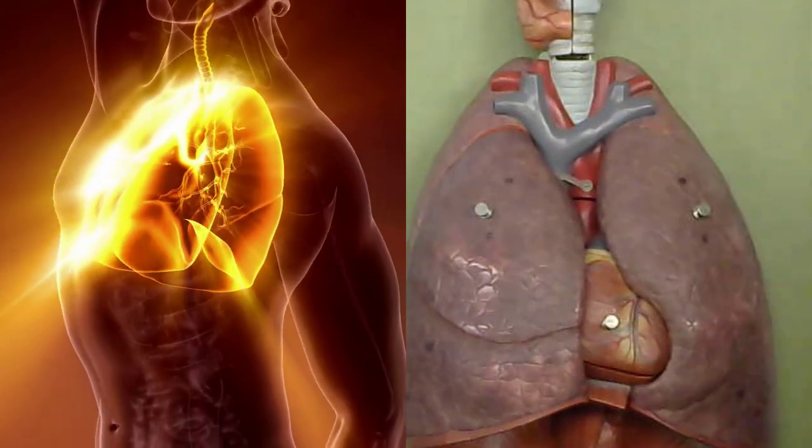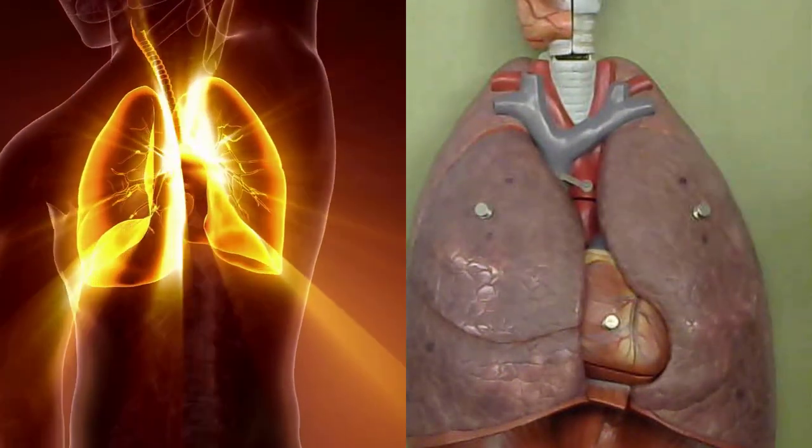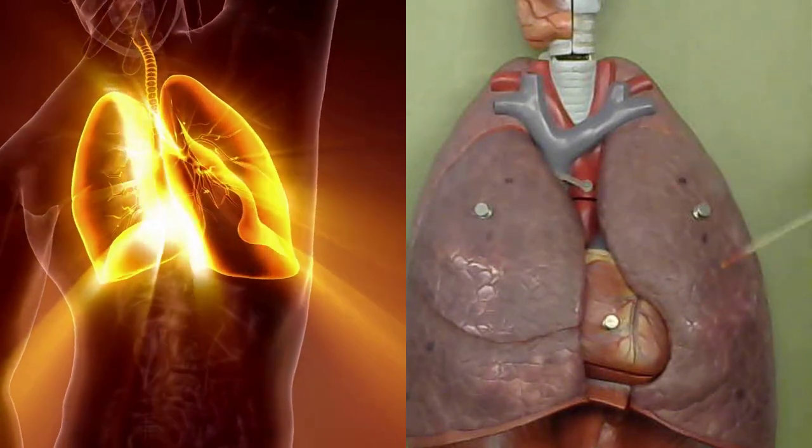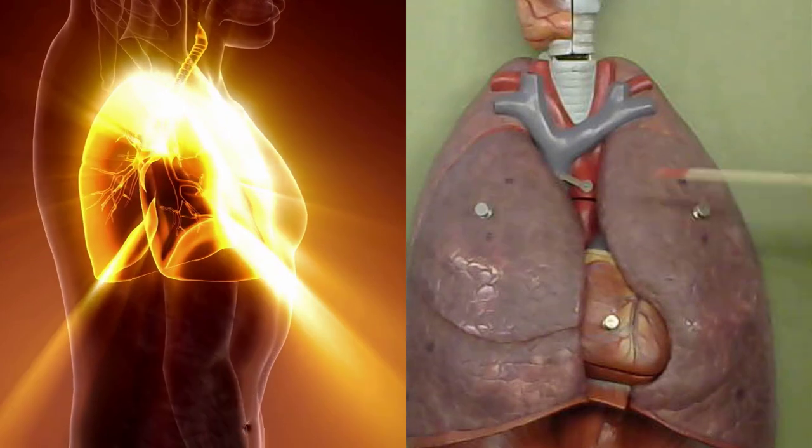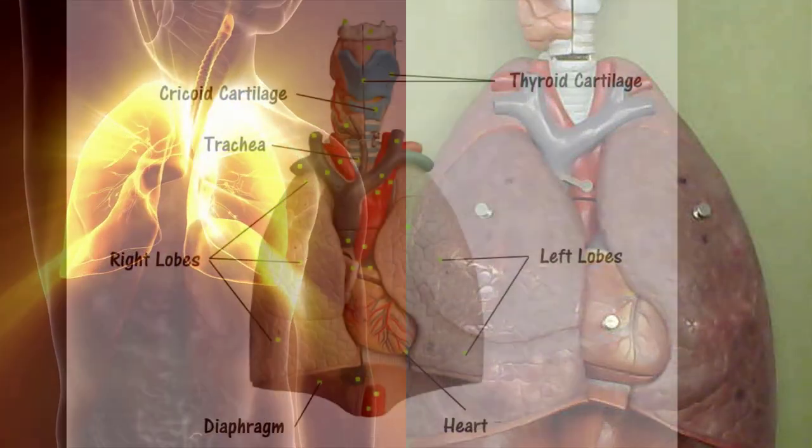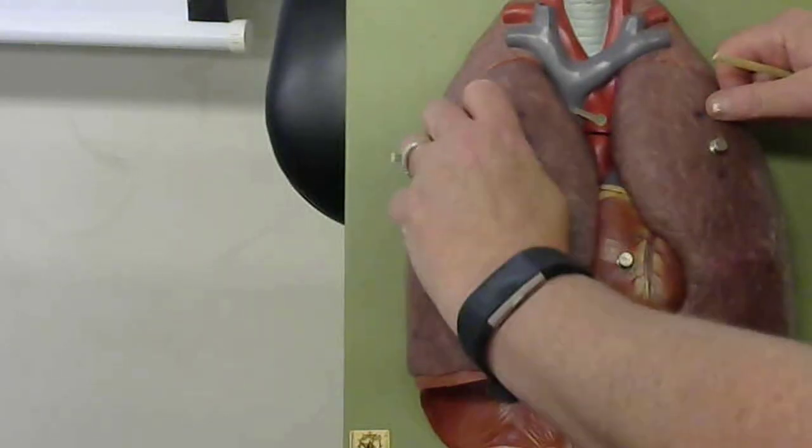Now one of the things to note here is that the lungs are asymmetric. So our right lung is going to have three lobes: a superior, a middle, and an inferior lobe. And the left lung only has two lobes: the inferior lobe and the superior lobe. And the reason for this is because we need room for the heart.